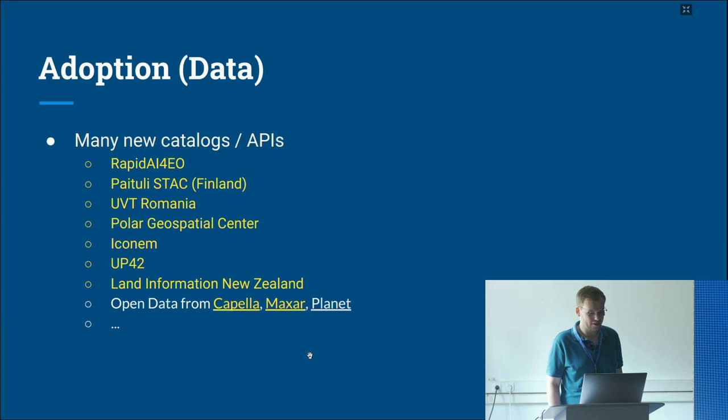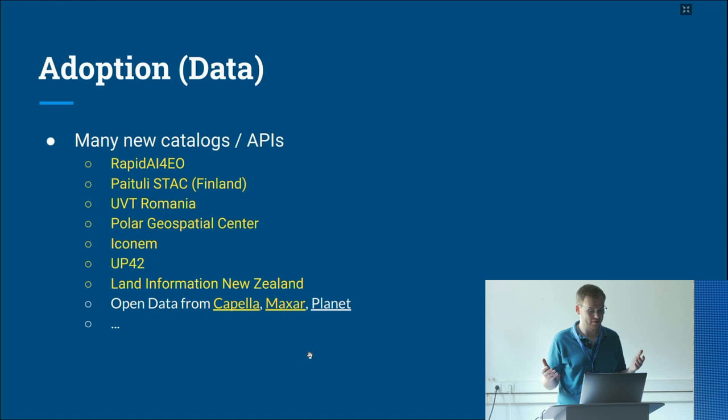Since last year, a lot of additional catalogs and APIs have been added. Some that I know of include Rapid AI, Finland, Romania, Polar Geospatial Center, Econium, Up42, and Land Information New Zealand. There are also open catalogs from commercial providers like Capella, Maxar, and Planet, which you can use for disaster response, for example.